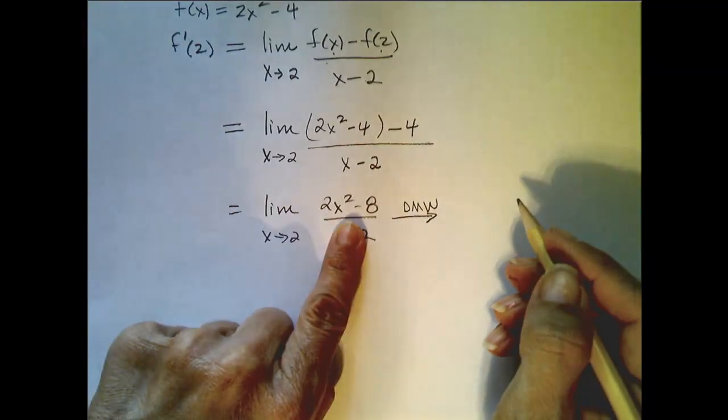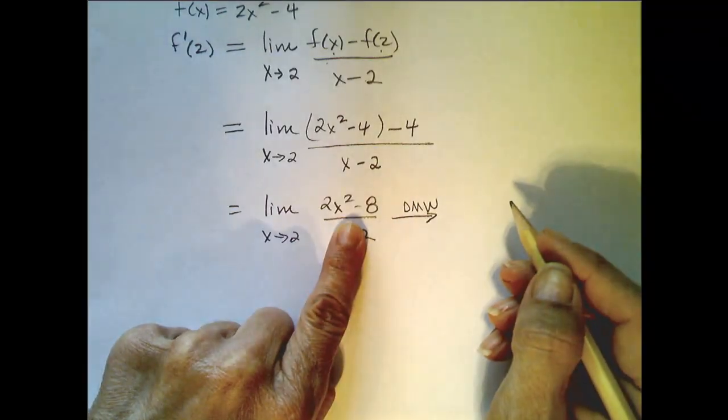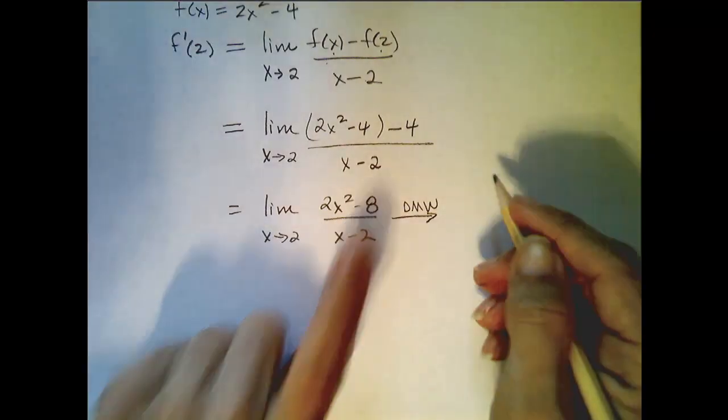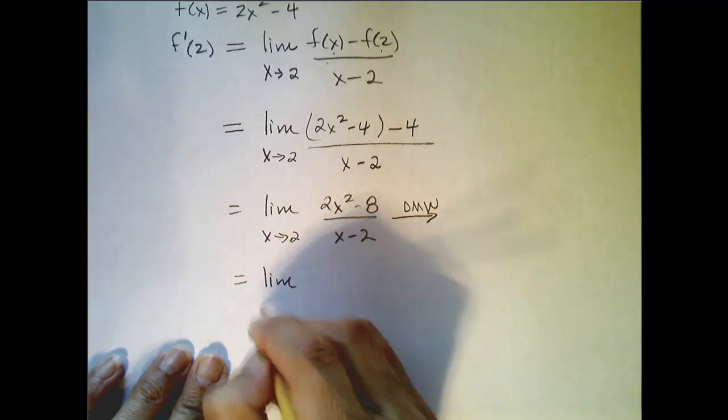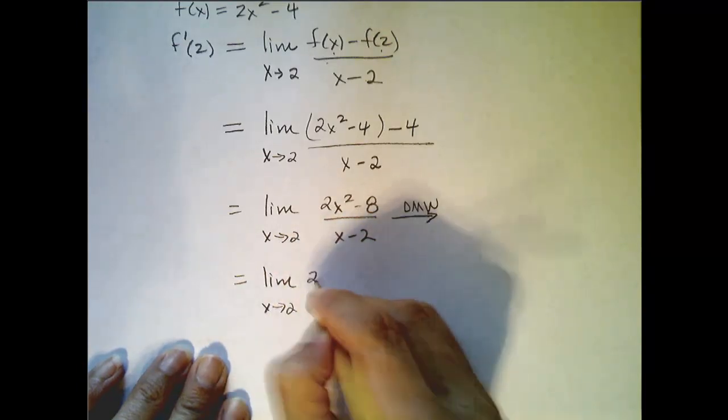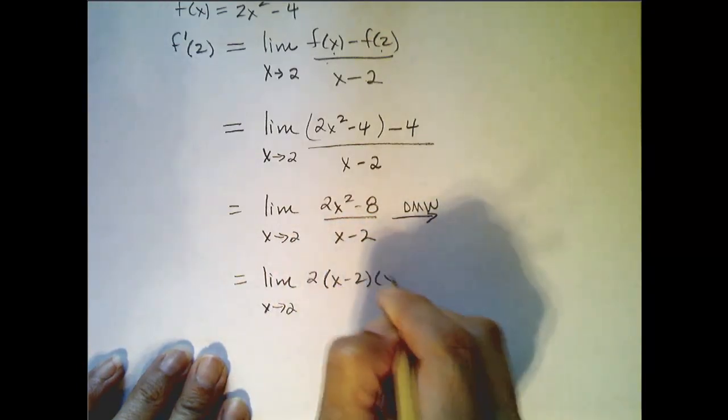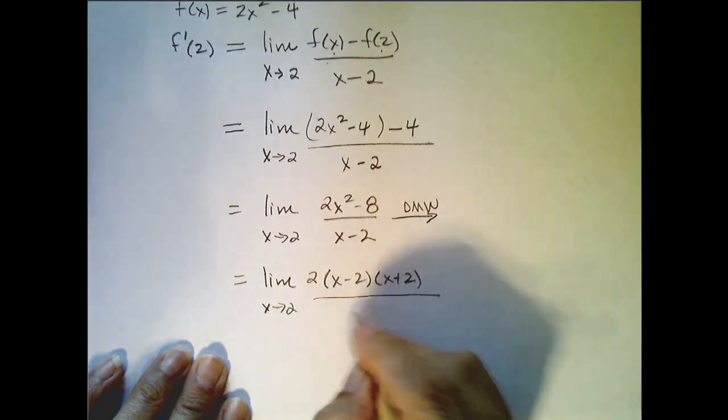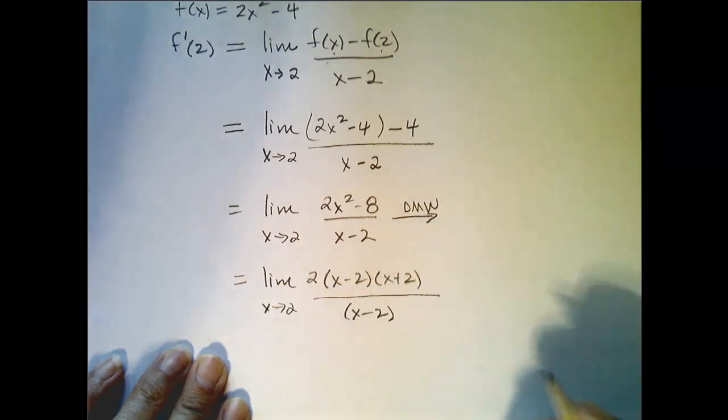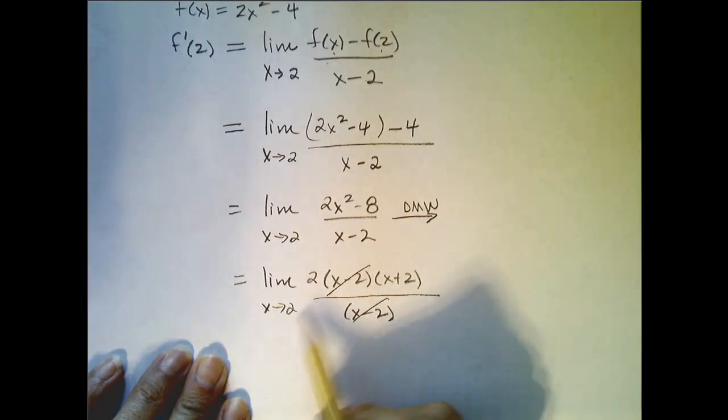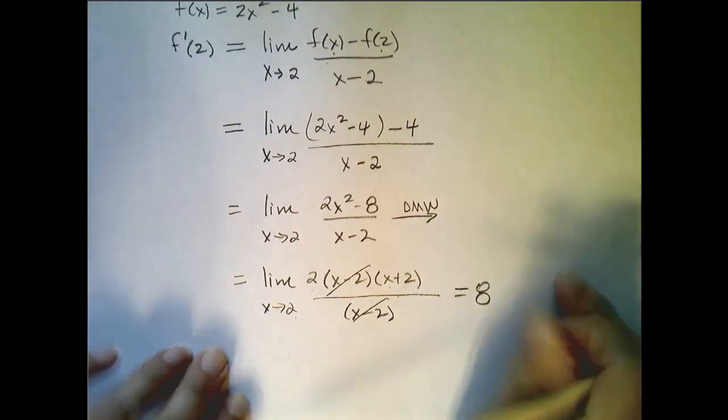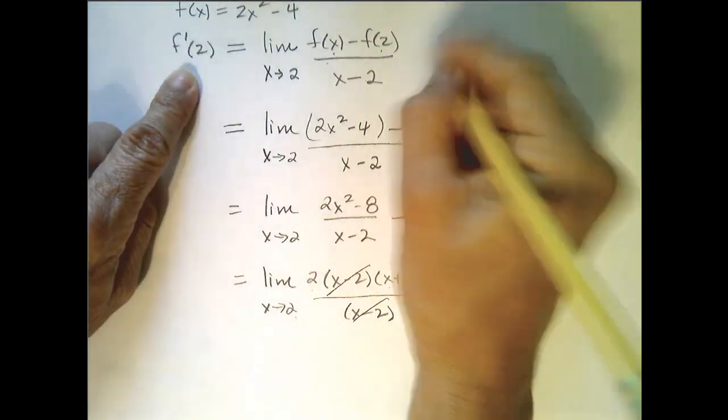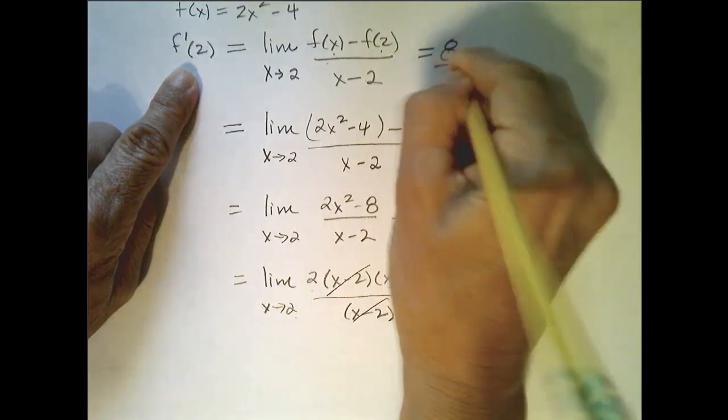I'm going to try factoring out a 2, and then factoring the difference of 2 squares. See if you believe this, this limit is actually equal to the limit as x goes to 2, of 2 times x minus 2, x plus 2, all over x minus 2. Now I can cancel, and I can do direct substitution. 2 times 2 plus 2 is 8. So the derivative of my function at 2 is 8.